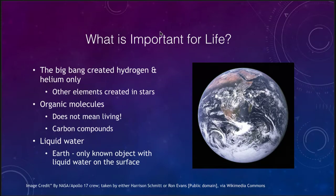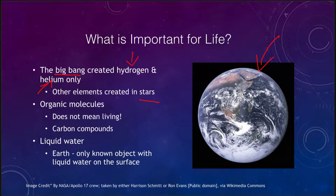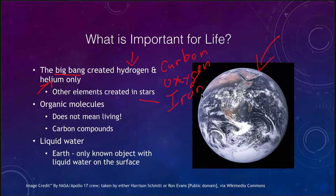What kind of things are important for life? One thing we have to remember is that the Big Bang created only two elements — only hydrogen and helium. Everything else was created in stars. That means the very earliest planets to form couldn't have looked like the Earth because there would have been no heavier elements — anything other than hydrogen and helium — from which to form them. We need things like carbon, oxygen, and other elements like iron that make up our blood, and all of those had to have been created in stars.